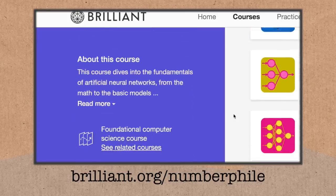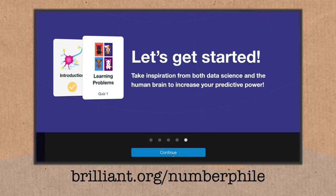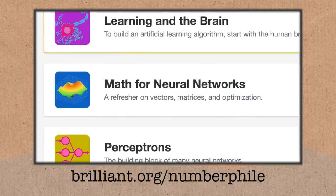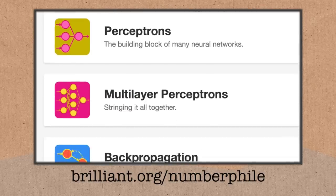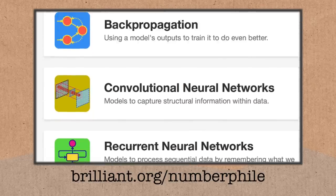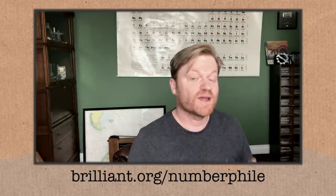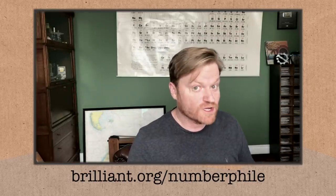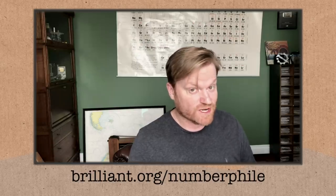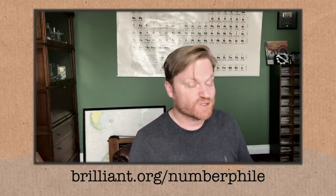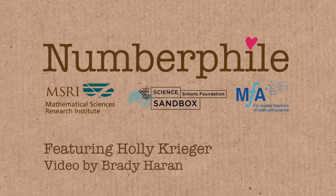Really get your brain around how all this artificial intelligence stuff's working. There's loads of free content on Brilliant, but you can get 20% off their premium subscription, which opens the door to everything, by going to brilliant.org slash numberphile. There's the URL on the screen. Our thanks to Brilliant for supporting this episode.